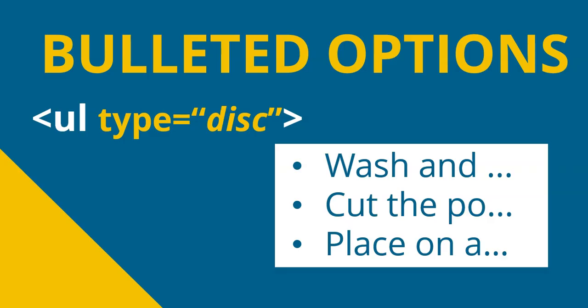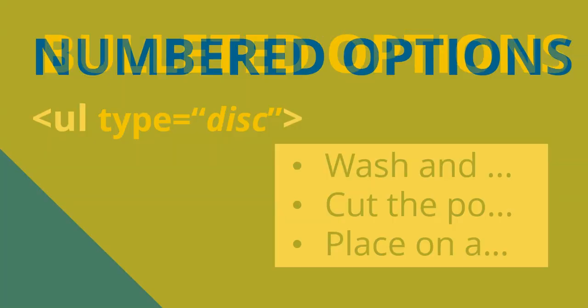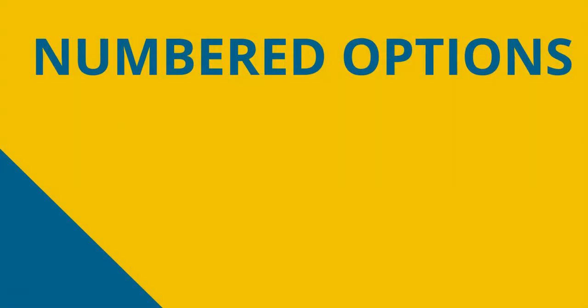With a numbered list, we also have the type option. In the type option, we need to give it the value for whatever is going to be the first option in the list. By default, the first options are 1, so that will be 1, 2, 3, 4. But we could change it.